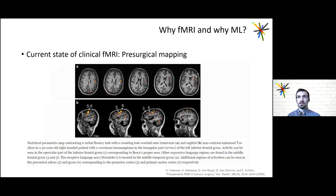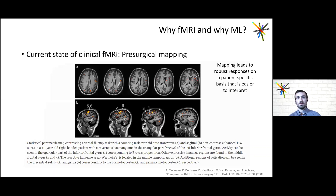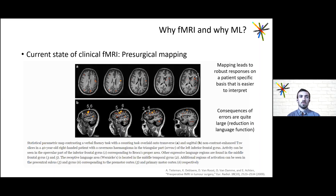I'd like to start with looking at the current state of clinical fMRI, which is generally in pre-surgical mapping. I'm showing a figure from a paper showing the response of the brain to a verbal task. The idea is to avoid these areas when doing tumor resection so that the patient doesn't end up with a language disability following surgery. A key feature of why fMRI works really great for this is the robust, patient-specific mapping that's easy to interpret anatomically, covering language and motor and cognitive aspects of language.